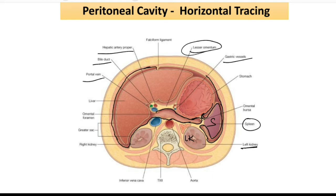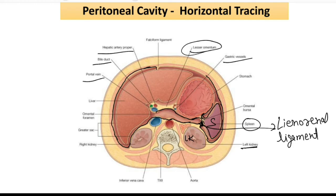The portion reflecting from the spleen to the left kidney forms a ligament known as the lieno-renal ligament. This ligament is between the spleen and the left kidney.